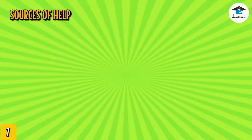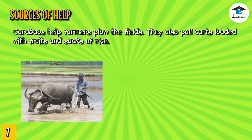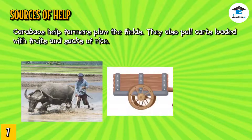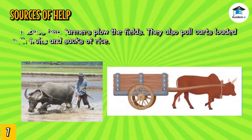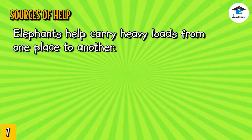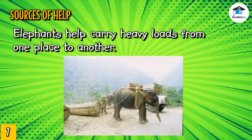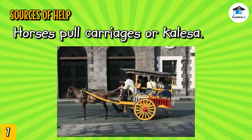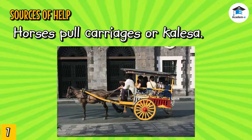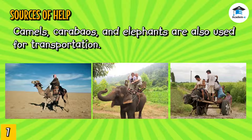Some animals help people with their daily activities. Carabaos help farmers plow the fields and also pull carts loaded with fruits and sacks of rice. In other countries, elephants help carry heavy loads like logs from one place to another. Horses pull carriages or calessa as they transport people and goods. Other animals used for transportation are camels, carabaos, and elephants.